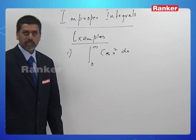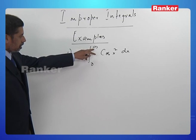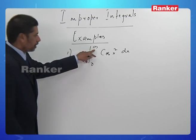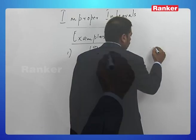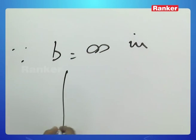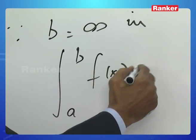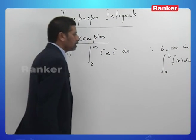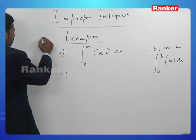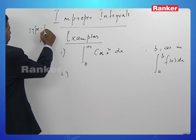Now, let us look at this example. This is an improper integral because of the upper limit being plus infinity. Since b is equal to plus infinity in ∫a to b f(x) dx, this is a Type 1 improper integral.